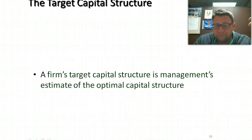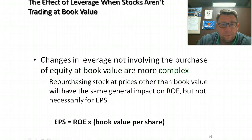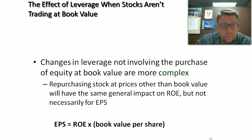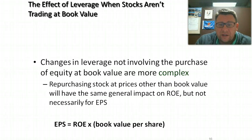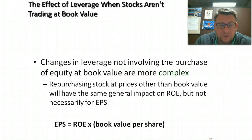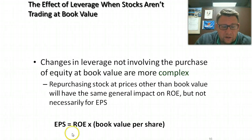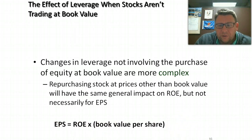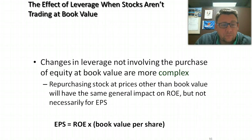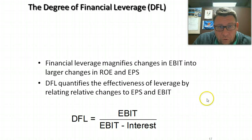The target capital structure is based on management's estimate of what they think will maximize the stock price. When stocks aren't trading at book value — which is almost always the case — changes in leverage not involving the purchase of equity at book value are more complex. The formula is: earnings per share equals ROE multiplied by the book value per share.